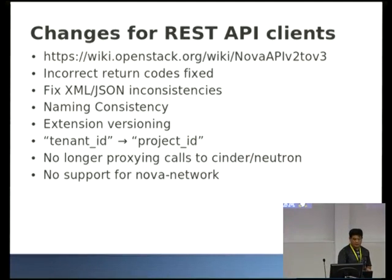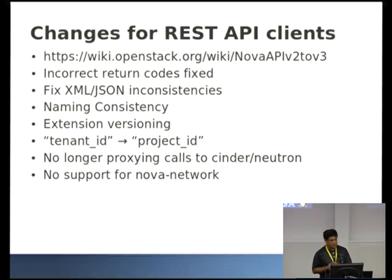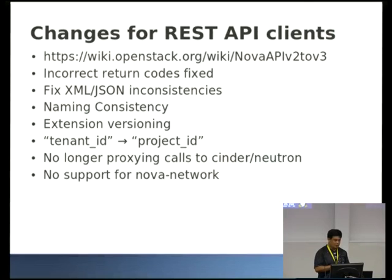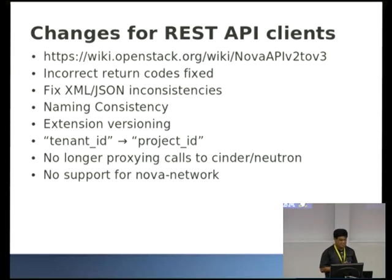If you're running a REST API client, these are the things you'll need to change between V2 and V3. We've got a wiki page that's not quite complete but we're trying to get it more up to date. Return codes — we're fixing a lot of those. XML/JSON consistencies, naming consistencies. There's the whole big tenant ID to project ID change — it originally was project ID, then went to tenant ID, and now it's going back to project ID. Hopefully it will stay there across OpenStack projects.